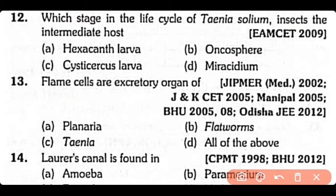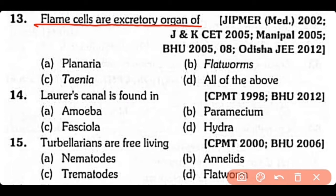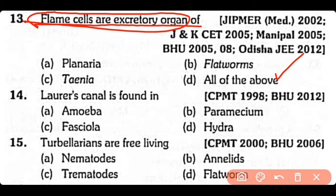Question no.13. Flame cells are the excretory organs of: Planaria, flatworms, Taenia, or all of the above? The correct answer is option D. Flame cells are the excretory organs of flatworms, including Planaria as well as Taenia.